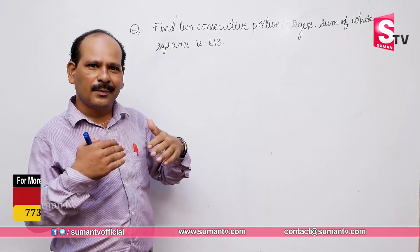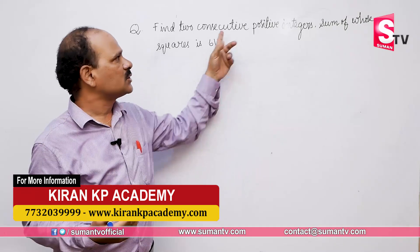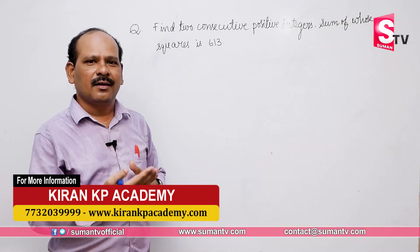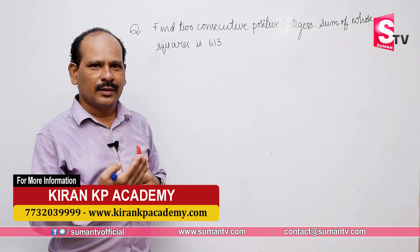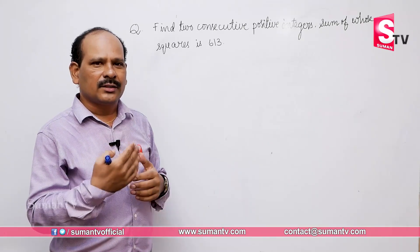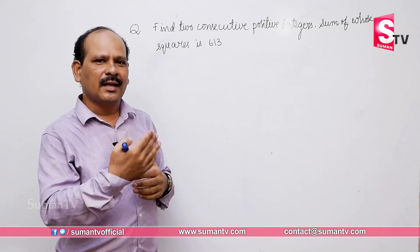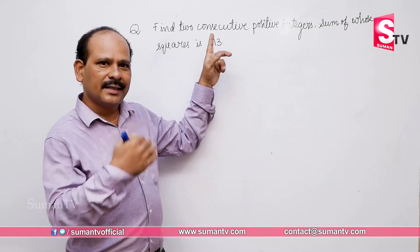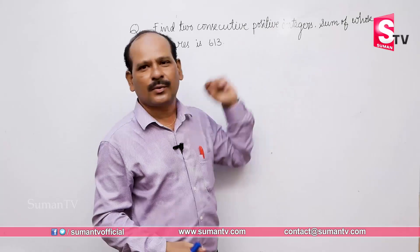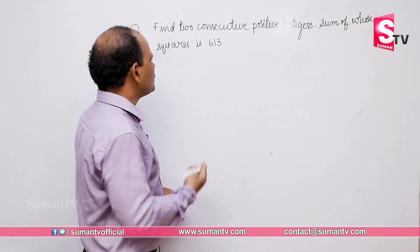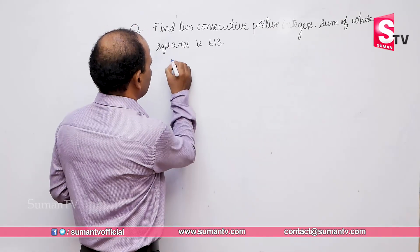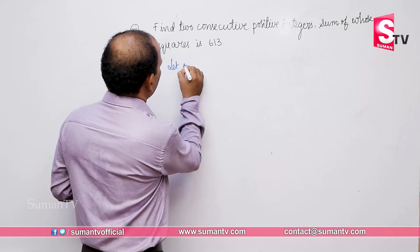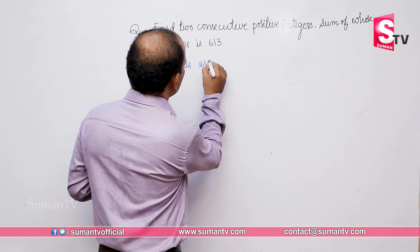Consecutive positive numbers means that number and its next number. For example, 16 and 17, 100 and 101, 1000 and 1001 — like this, continuous numbers where that number and the next number are called consecutive positive numbers.